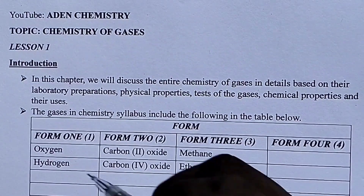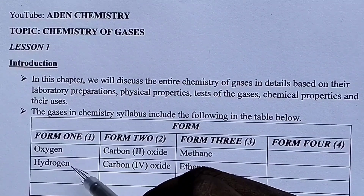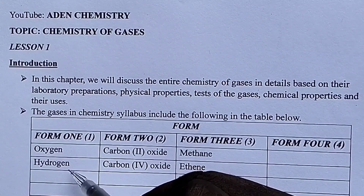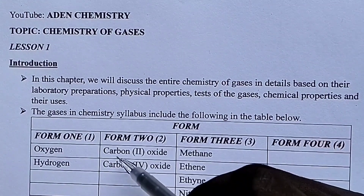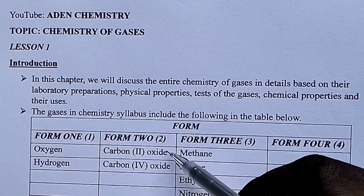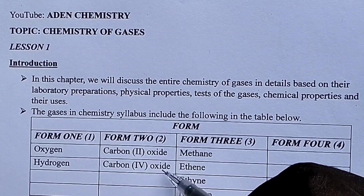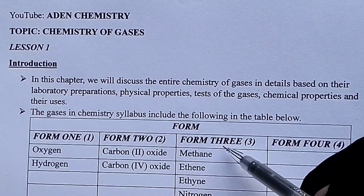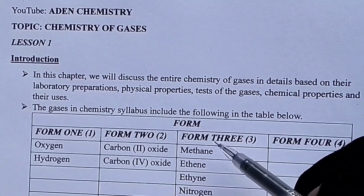In Form One we have oxygen gas and also hydrogen gas. In Form Two we have carbon monoxide (CO) gas and also carbon dioxide (CO₂) gas. In Form Three is where we have a lot of gases.